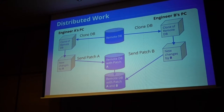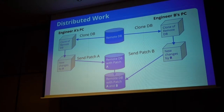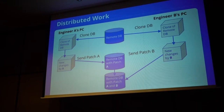Here I want to talk about distributed work. Let's assume we have a remote database with the drawing somewhere on a server. One engineer clones this database, makes some changes, and we have a patch API which can create a patch. A patch contains exactly the changes between two revisions, and you send this patch back to the remote database. There is another API which can apply that patch as binary data, and you will have a new revision in the remote database. Then engineer B can also clone this database, make some changes with the same API, send those changes to the remote server, and they will be applied. At the end you will have a united version from both engineers in the remote database.